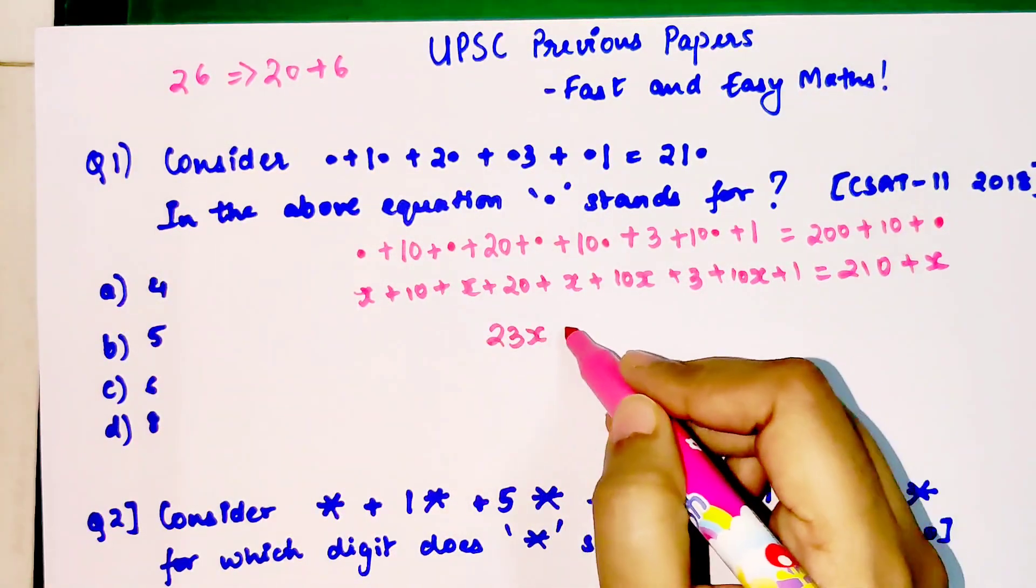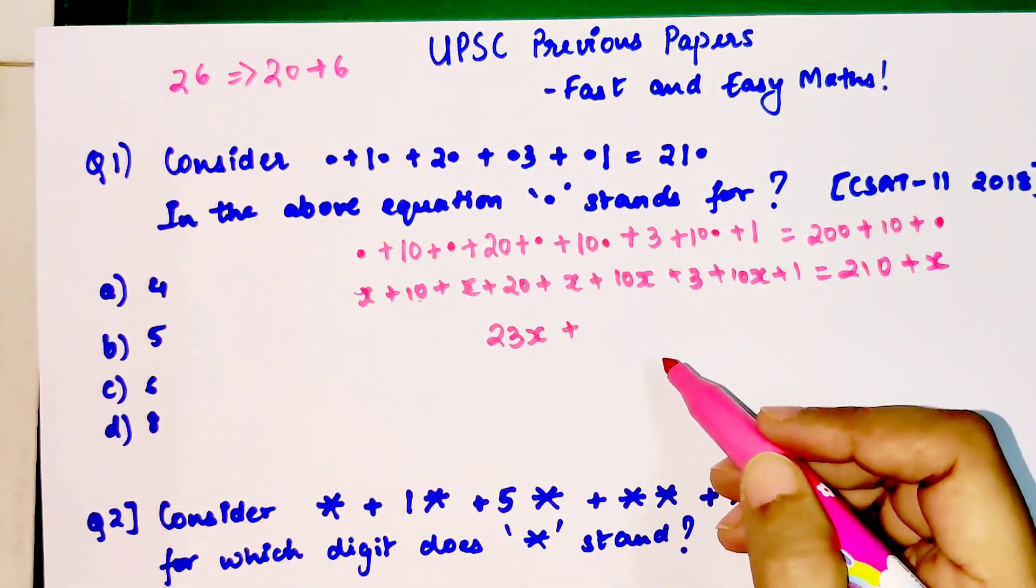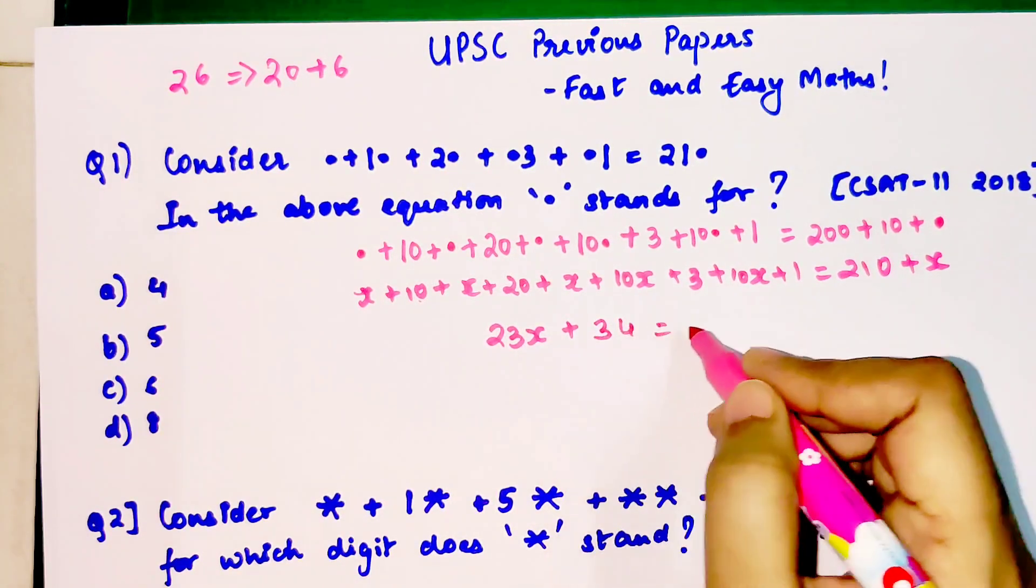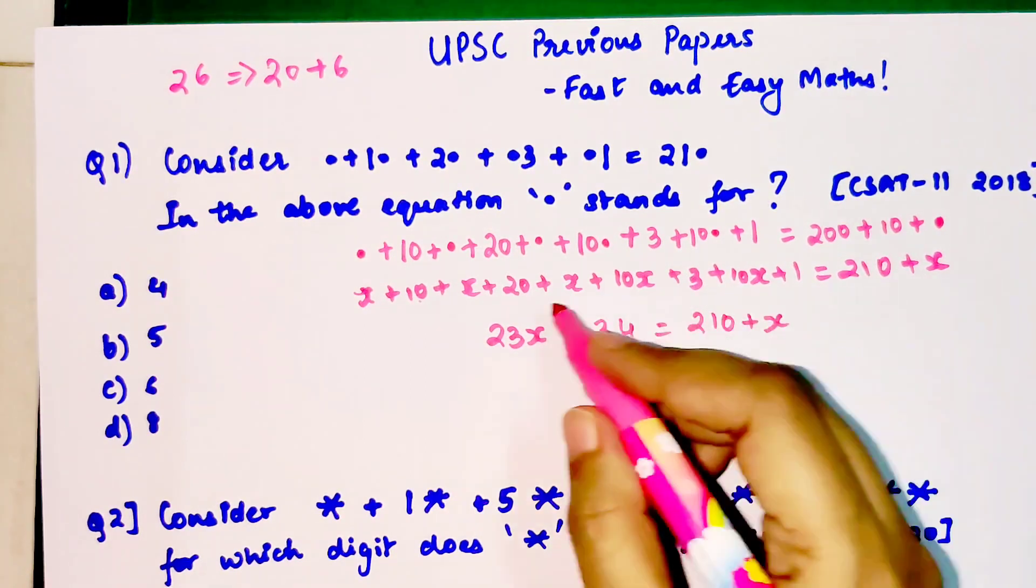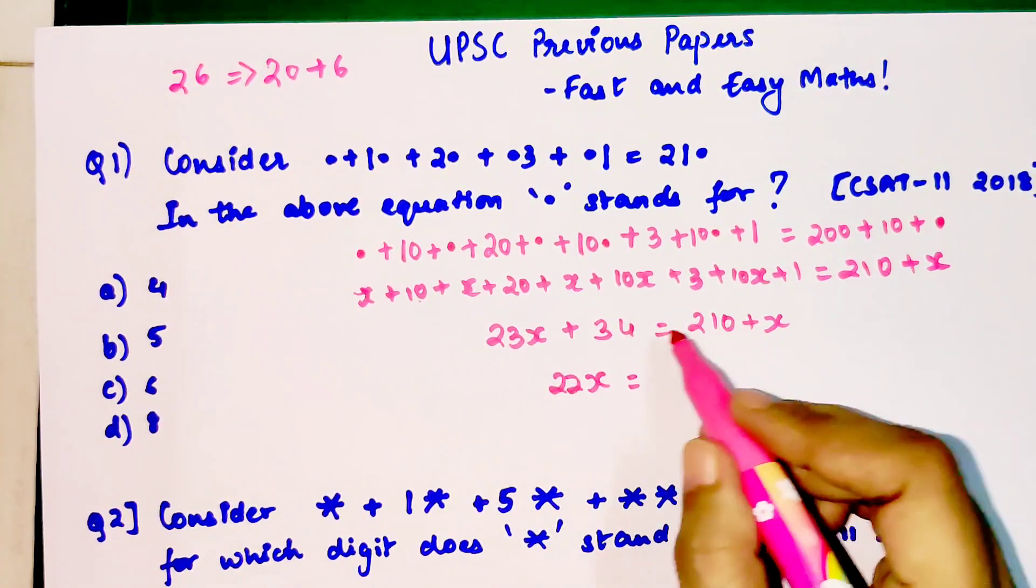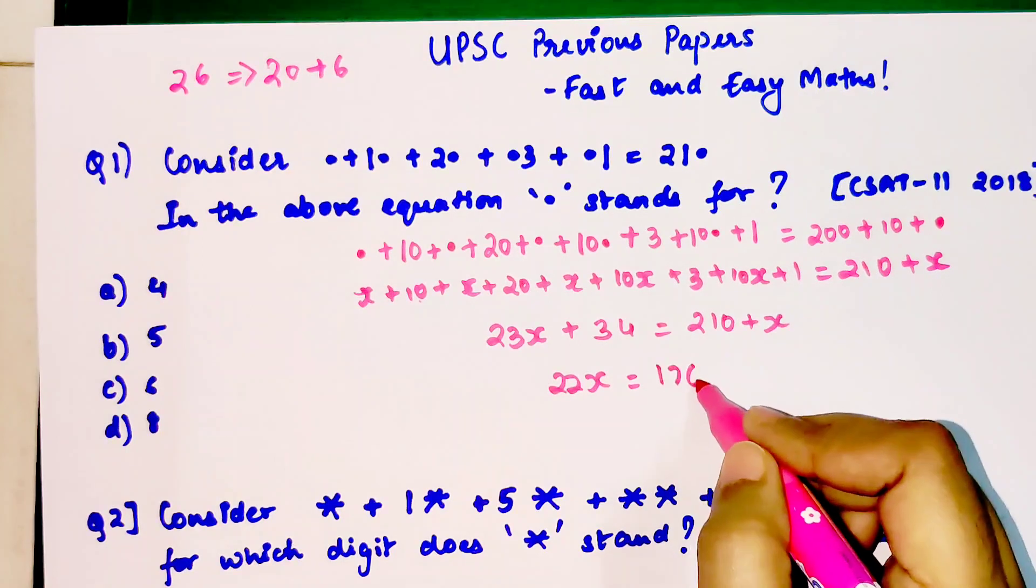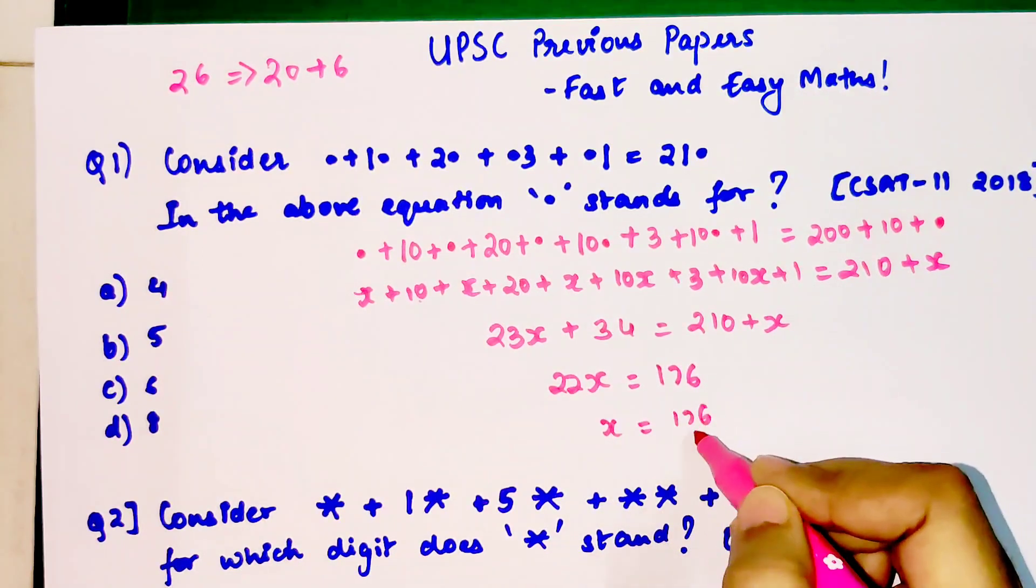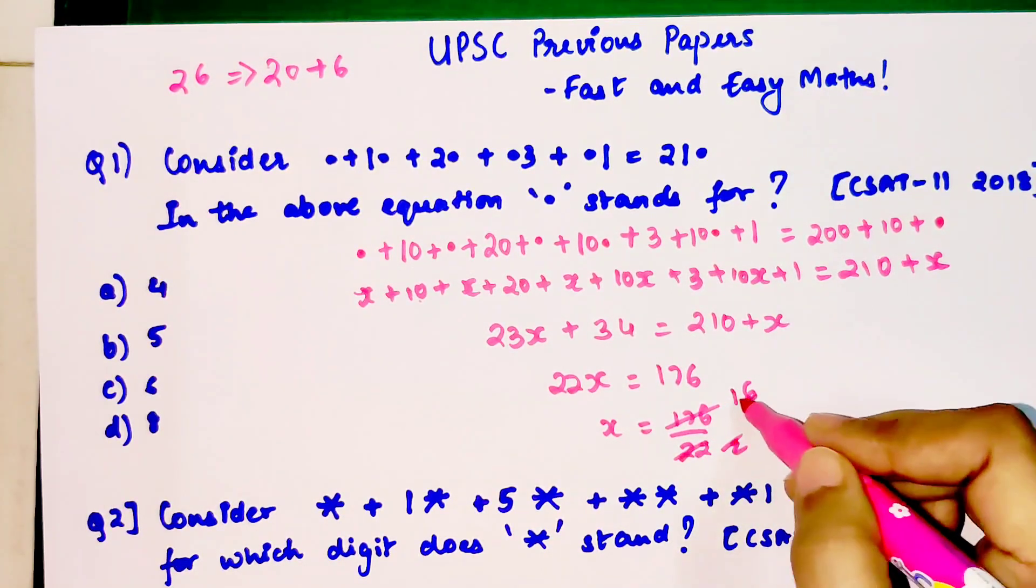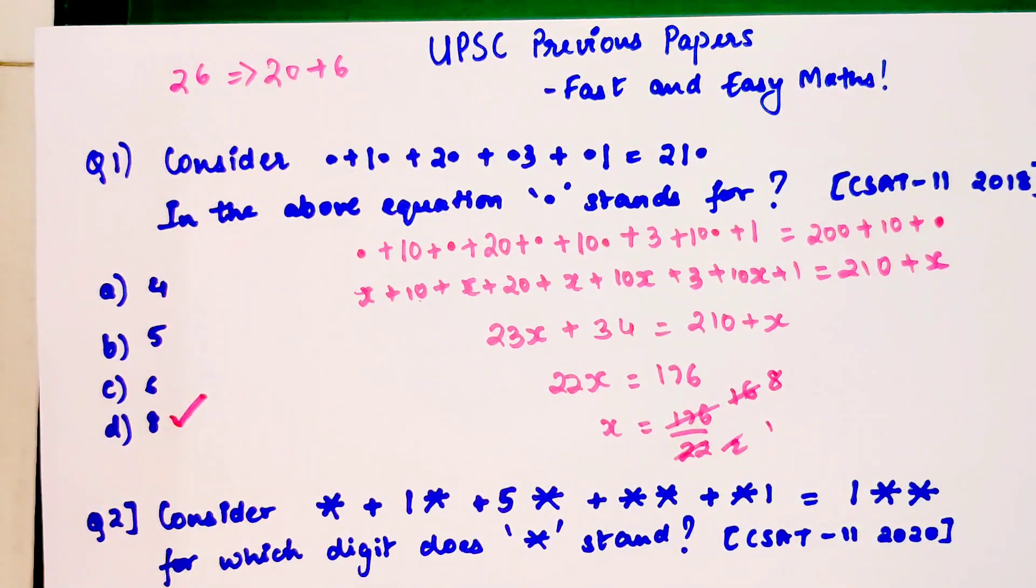Now we have x appearing 1, 2, 3 times and then 10x, so that's 13x + 10x = 23x. So 23x + 10 + 20 + 3 + 1, which is 23x + 34, equals 210 + x. Shifting x to this side and numbers to that side, we get 22x = 176. So x = 176 divided by 22, which gives us 8. While explaining takes time, but when you solve these problems 3-4 times, you can do them really quickly.